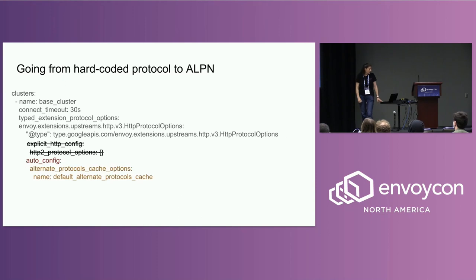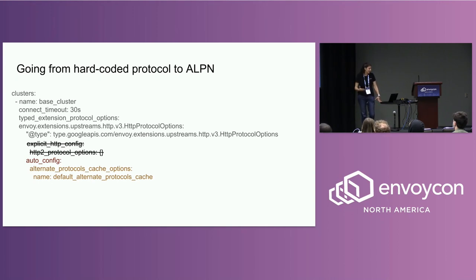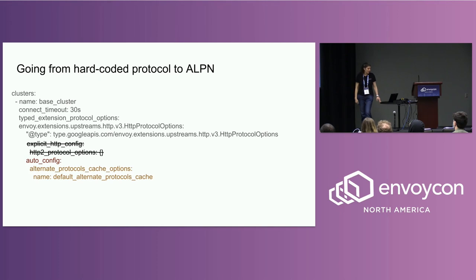For config, it's pretty simple. If you're using modern Envoy cluster configuration, you'd have a section explaining your HTTP protocol options. Where you would have had something like explicit HTTP config — here's my H2 config — you just replace that with auto config. That's it. Optionally, you can add in this alternate protocol cache if you want to share caches across different clusters.